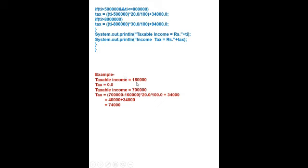This is an example. Suppose taxable income is 1,60,000, then tax = 0. If taxable income is 7,00,000, then: (7,00,000 - 5,00,000) * 20 / 100 + 34,000 = 2,00,000 * 20% = 40,000 + 34,000 = 74,000. So Mr. Sharma will pay 74,000 tax if his taxable income is 7,00,000.